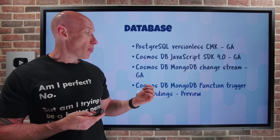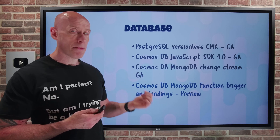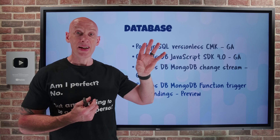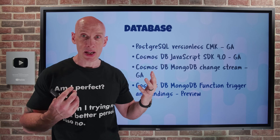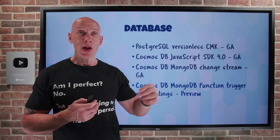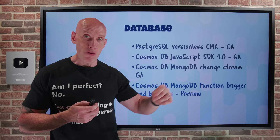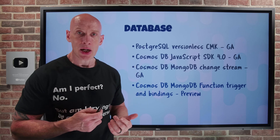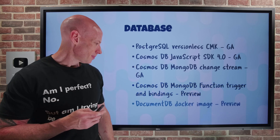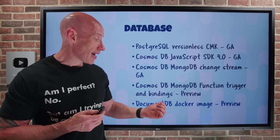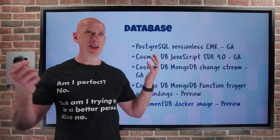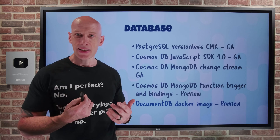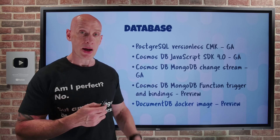Cosmos DB MongoDB also now has function triggers and bindings in preview. I can trigger a serverless Azure Function when a change occurs in my MongoDB vCore — so real-time changes can trigger code to run — and I can also bind to do further updates or changes to the database. And DocumentDB now has a Docker image in preview, letting me run DocumentDB locally to test things out before consuming it in the cloud.